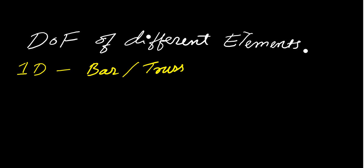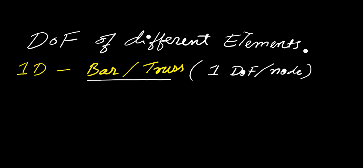So in this case, what will be the degree of freedom? It means what will be the deformation or displacement for a 1D bar element. Bar and trusses will have the deformation at the node. There will be 1 degree of freedom per node. This is for axial load.